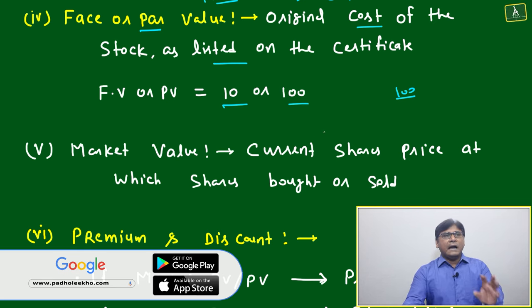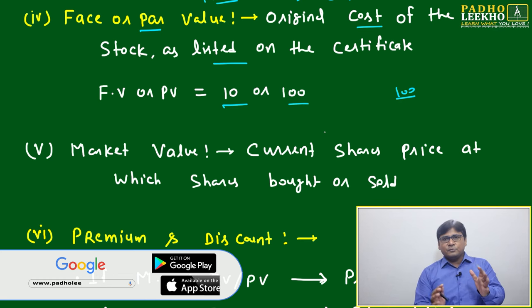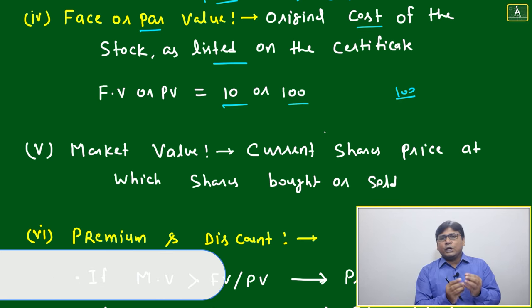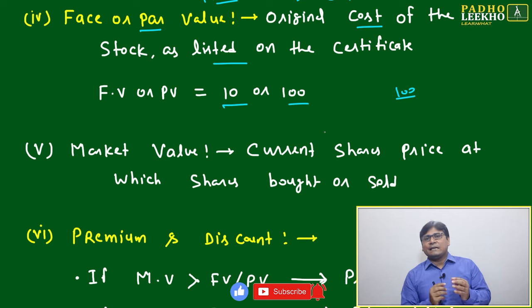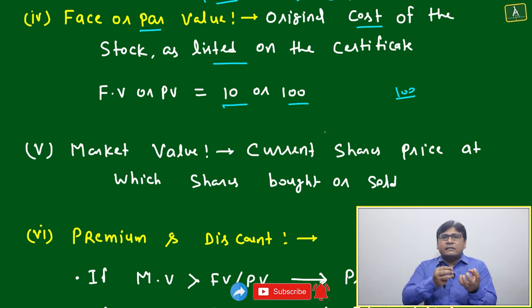This is your original cost of a stock at which shares will be released in the market. Suppose I told you 10 lakh rupees you want to put in the market, 100 rupees each share. Then 100 rupees at the time of releasing will become your face value.